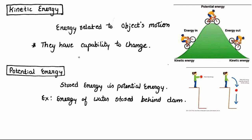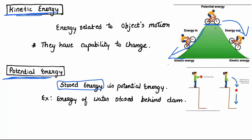Next, we'll see some basic energy types. First is kinetic energy and potential energy. If you take a bicycle on top of a hill, it has the potential to do work — that is potential energy, which is stored energy. When the bicycle is in motion coming down, that is kinetic energy. Similarly, water stored behind a dam has potential energy; when it flows, it does work.